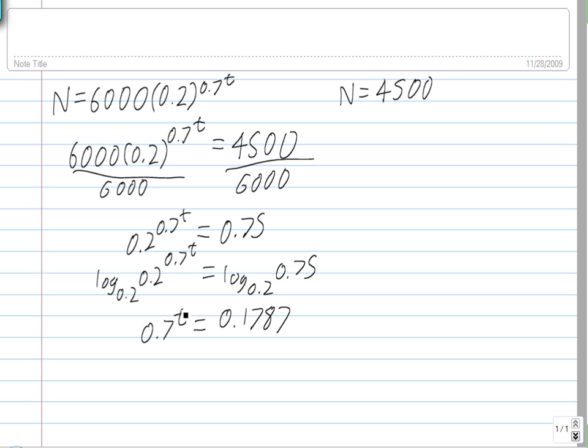Now we need to do logarithm again to get t alone. So take the log base 0.7 of both sides. So log base 0.7 of 0.7 to the t equals log base 0.7 of 0.1787. Now when you do this side, well, let's say on the left side, you're just left with t since log 0.7 of 0.7 cancels out, you're just left with t. On this side,